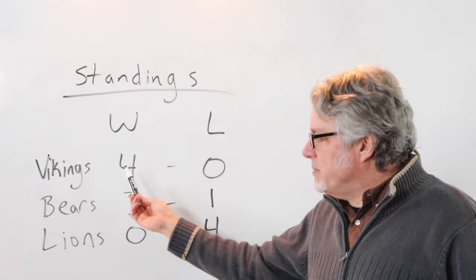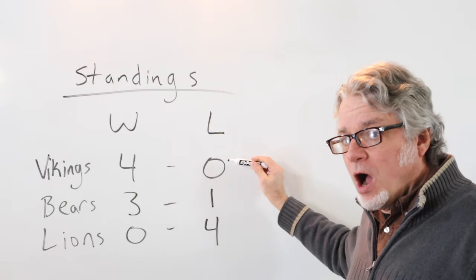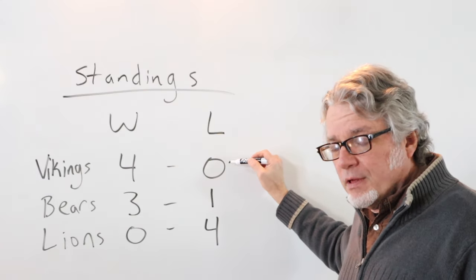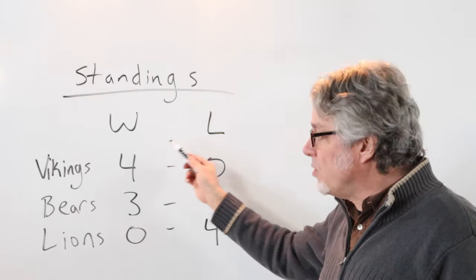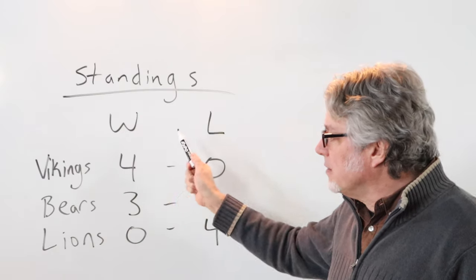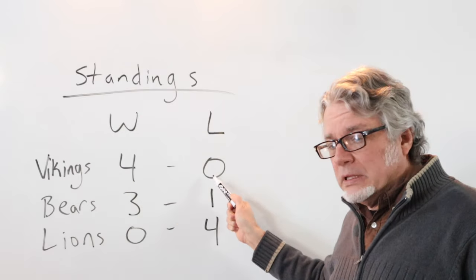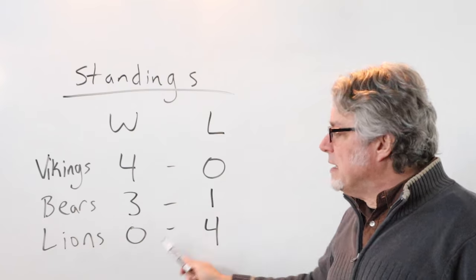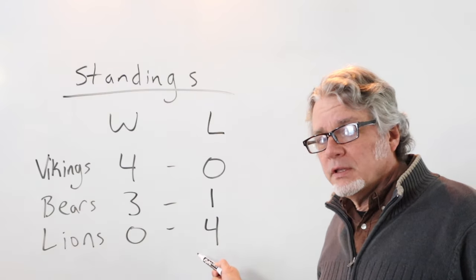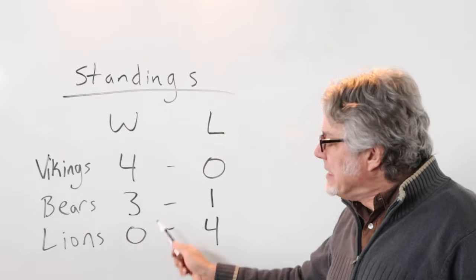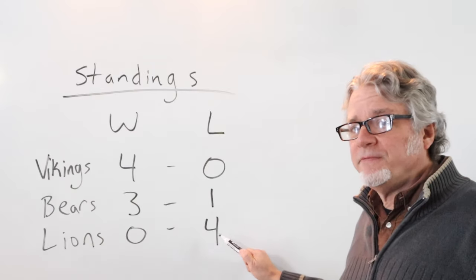This team is four and oh. Oh is often used in place of zero when talking about a loss or a win. They're four and oh. This team is three and one, but this team is oh and four. Instead of zero and four, it's oh and four.